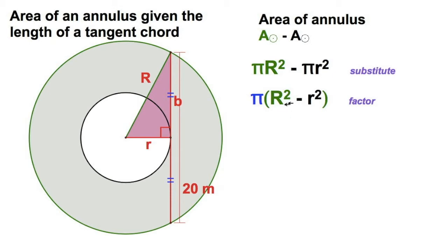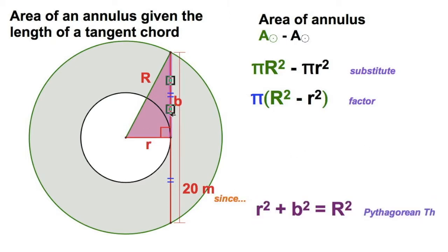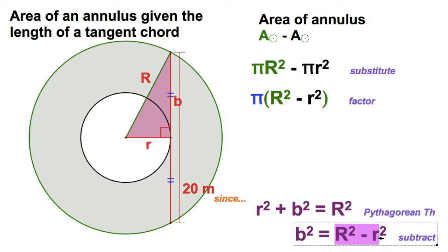We're going to factor this expression a little bit first — we're going to factor the pi out. And then, since the Pythagorean theorem gives me r squared plus b squared equals R squared, that looks kind of cool. Then we're going to do a little subtraction and subtract the smaller radius squared from both sides. And right there — that expression R squared minus r squared — that's the same expression I've got over here. So that means I can substitute: big R squared minus r squared for b squared.